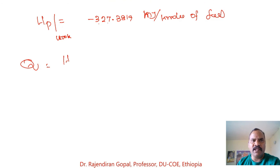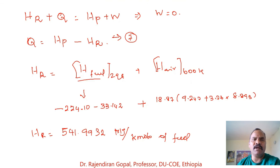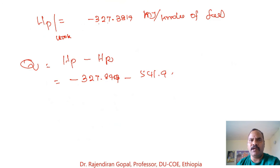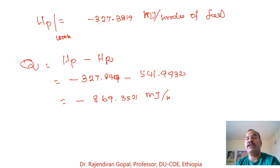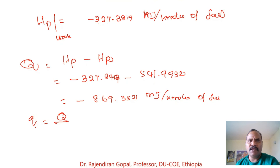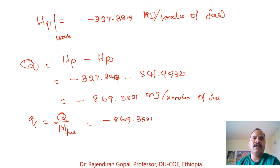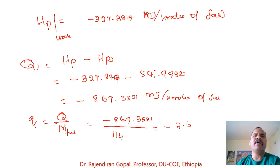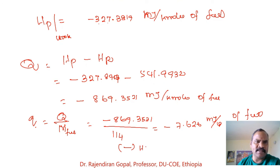The heat transfer Q = H_products − H_reactants = −327,389 − 541,993 = −869,357 MJ/kmol of fuel. Converting to per kilogram of fuel by dividing by the molecular mass of C8H18, which is 114 kg/kmol, gives Q = −869,357 / 114 = −7.626 MJ/kg of fuel. The negative sign indicates heat is transferred from the system.